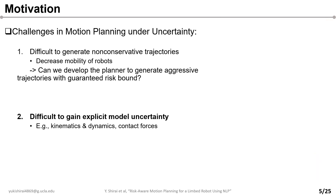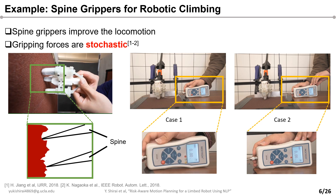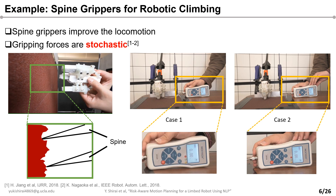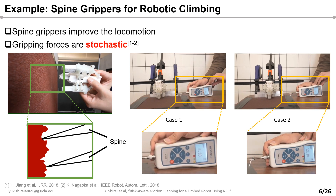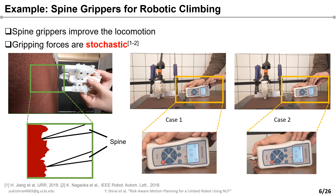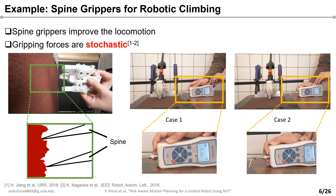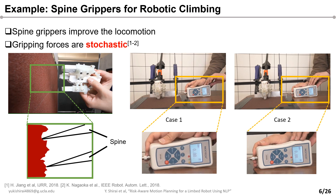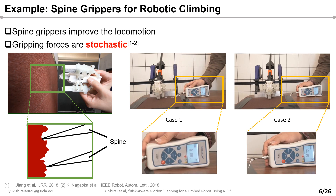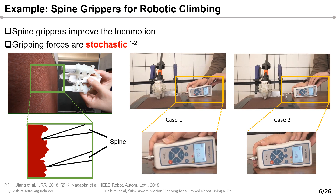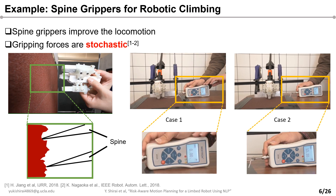The second challenge we solve is that it is difficult to get the uncertainty model. For the robotic climbing example, robots are able to improve the locomotion capability by installing grips. These gripping forces are stochastic because they depend on the stochastically distributed aspect strength. So even on the same surface, the gripper generates highly random forces, and obtaining this stochastic gripping model is challenging.